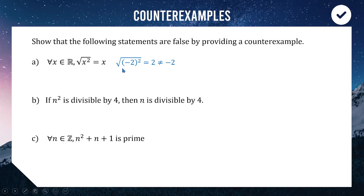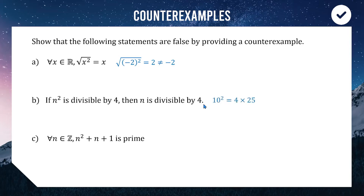For question B: 'if n² is divisible by 4, then n is also divisible by 4.' Can you think of a square number that is a multiple of 4 where the square root is not a multiple of 4? The first example that comes to mind is 10² = 100 = 4 × 25, so 10² is divisible by 4, however 10 is not divisible by 4. So the statement is not true for all n.